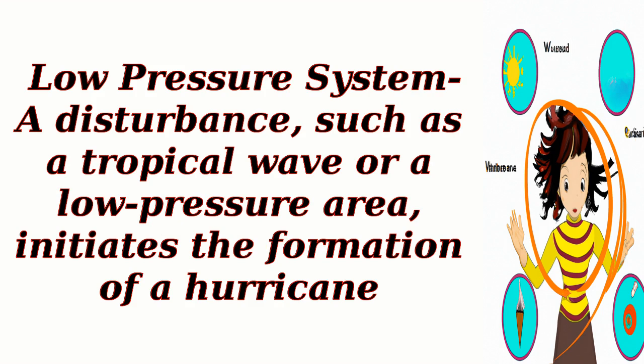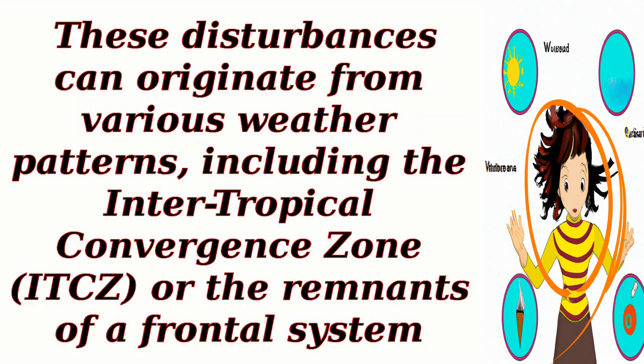Low-pressure system: a disturbance, such as a tropical wave or a low-pressure area, initiates the formation of a hurricane. These disturbances can originate from various weather patterns, including the Intertropical Convergence Zone (ITCZ) or the remnants of a frontal system.